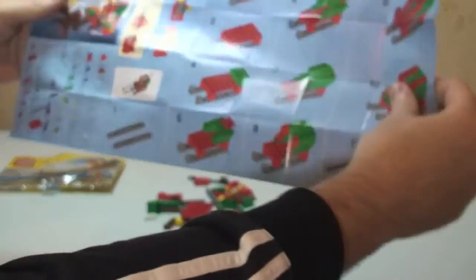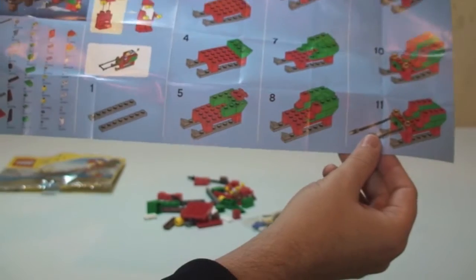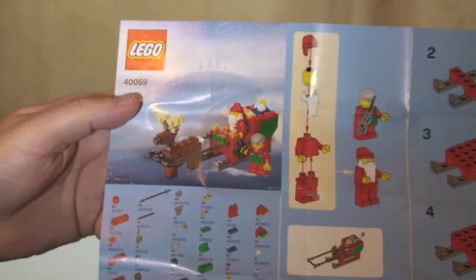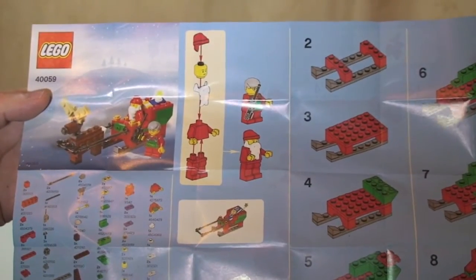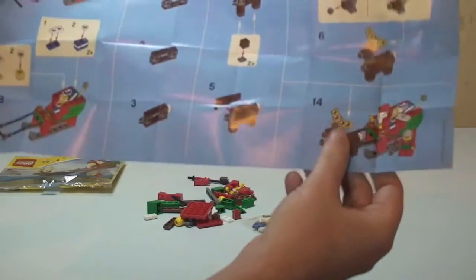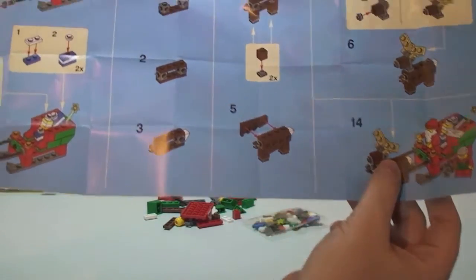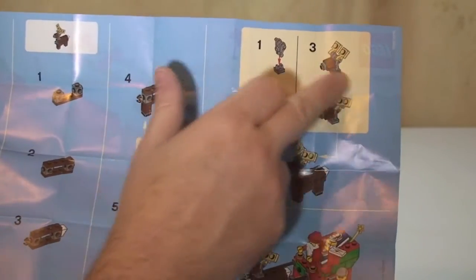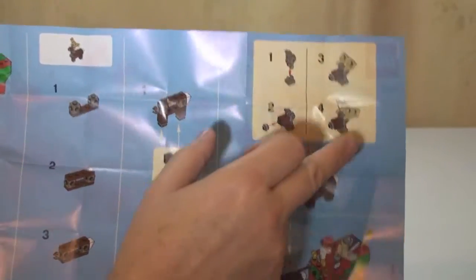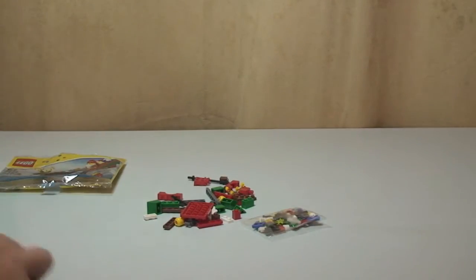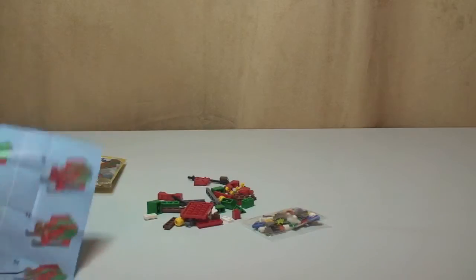On that first page we have obviously our inventory there. There's the picture, see the minifigure build. And we have 11 steps, and on the other side a total of 14 main steps. But as usual on these polybag instructions, you have a number of mini build sections within it. So anyway, we can see it there. So on with the build.